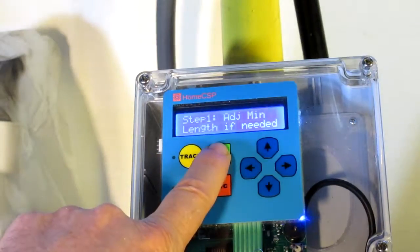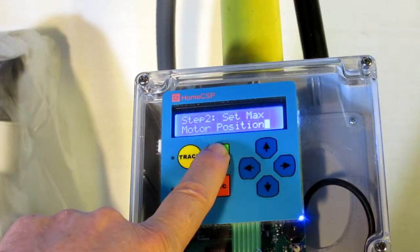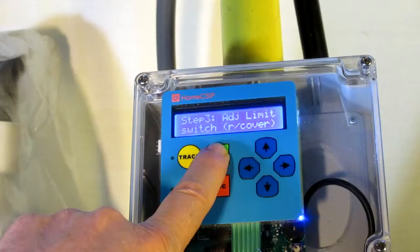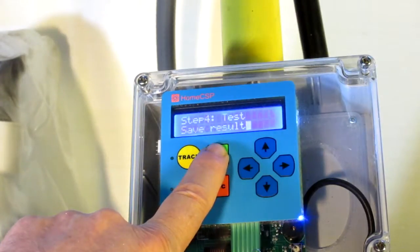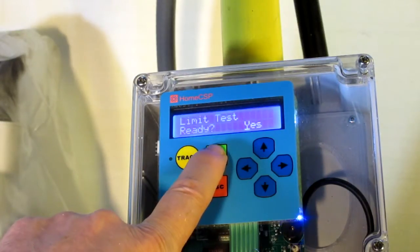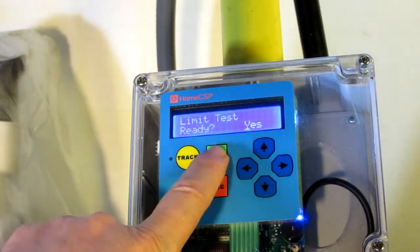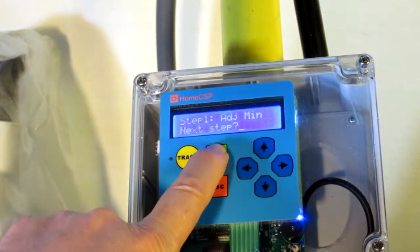And as before, adjust the minimum length if needed. And then we're going to drive to the maximum position. Adjust the limit switch if needed. And save the results. Of course, this has already been tuned up, so we don't need to adjust the length or set the limit switch. We're ready to go though.